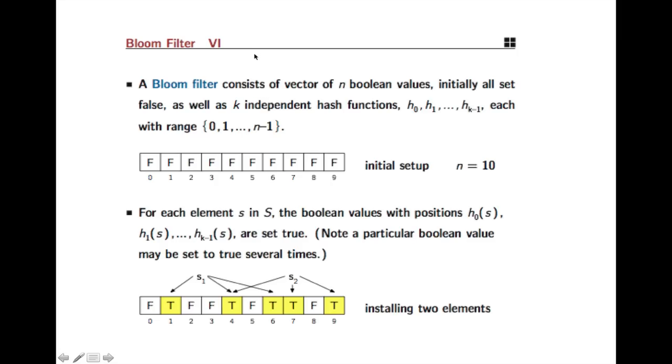So bloom filter consists of n boolean values, so it's an array of bits, n bits, and initially all are set to be false, and then we have k independent hash functions. So k independent hash functions are what we're going to use, and independent means that these functions are chosen at random.